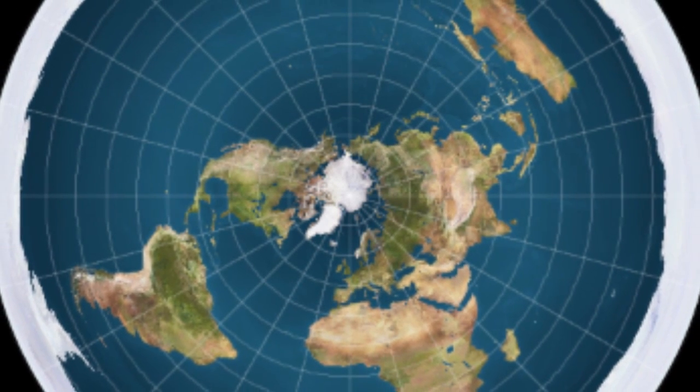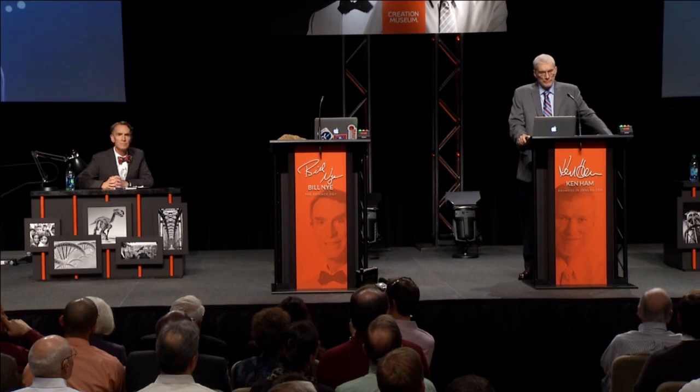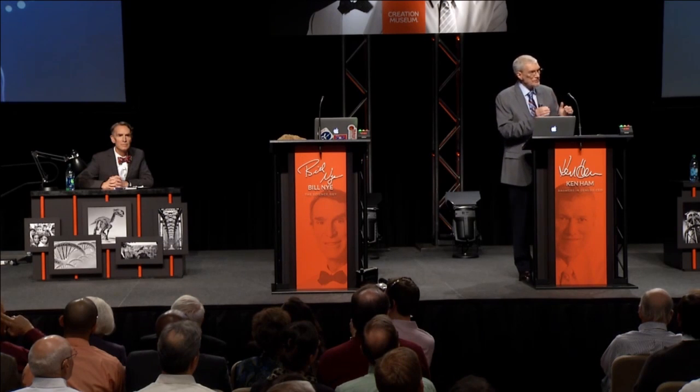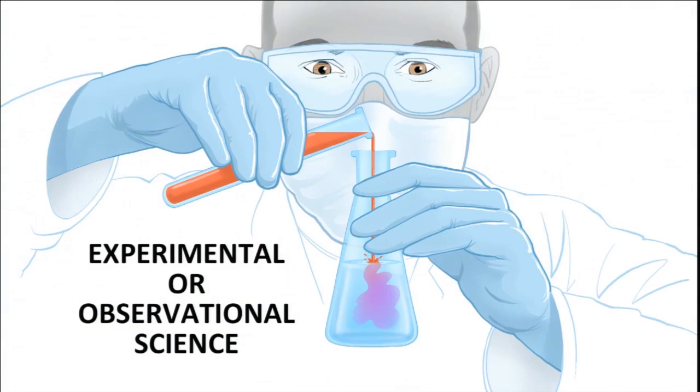Flat Earthers are probably the most deluded science deniers I've ever come across. While creationists deny specific things about the scientific method, specifically that one can confirm a hypothesis regarding the past by observing the present, Flat Earthers go so far as to reject easily observable facts as well, something not even New Agers will do.